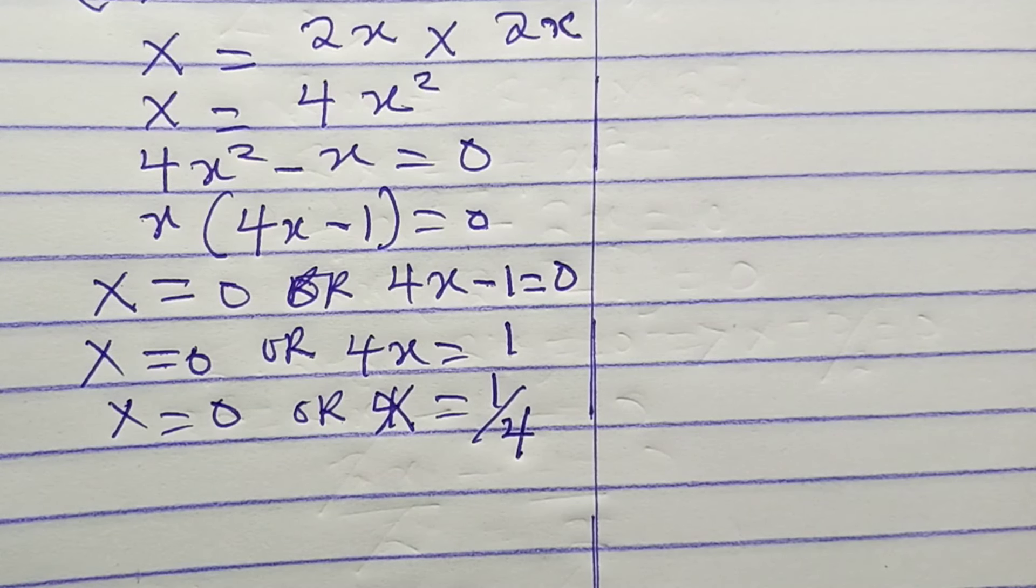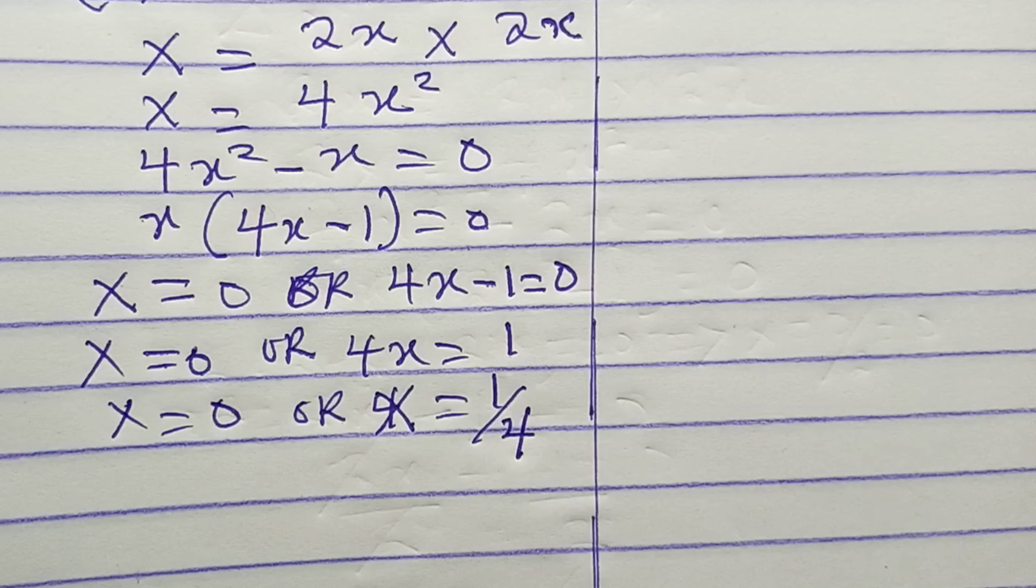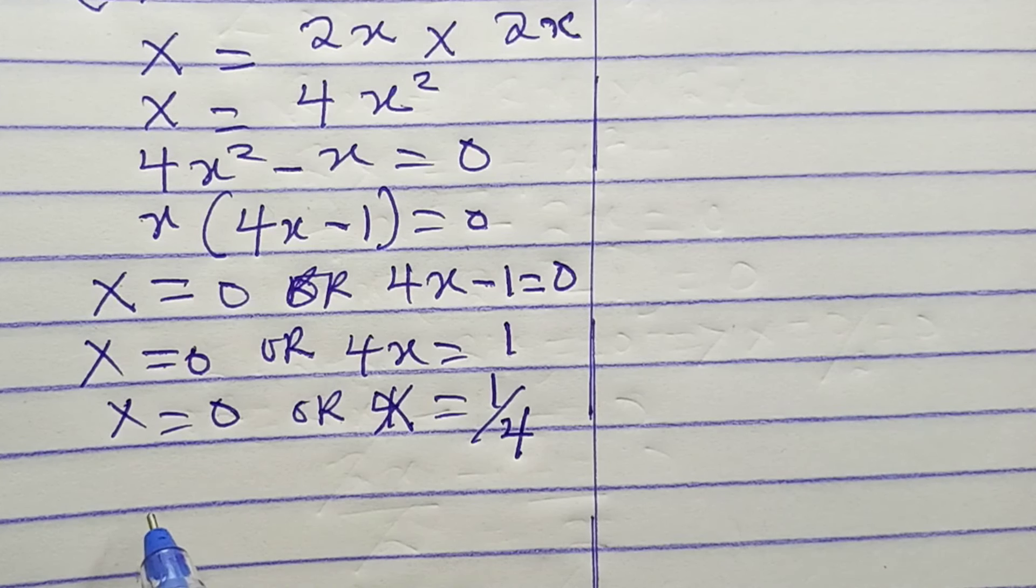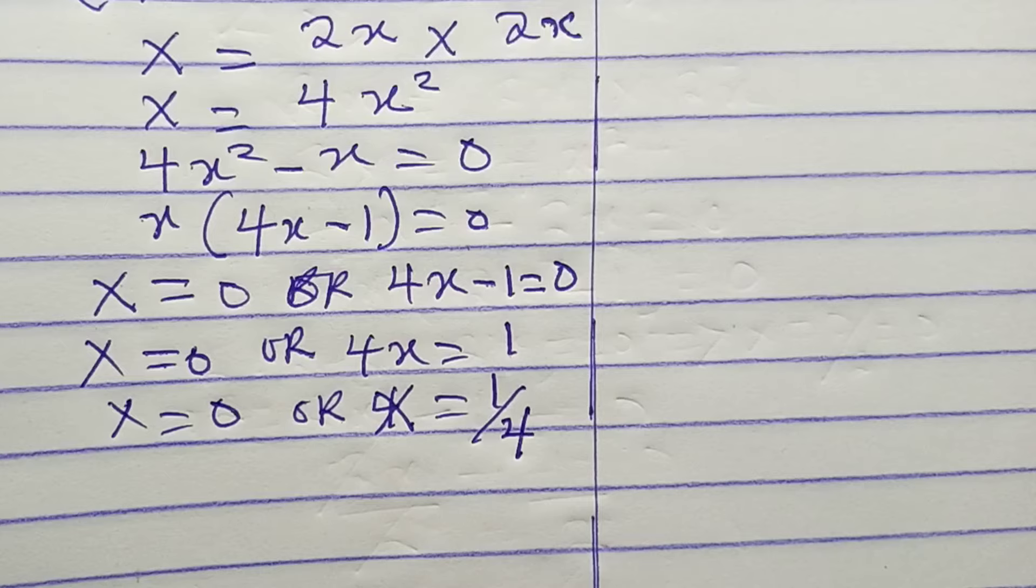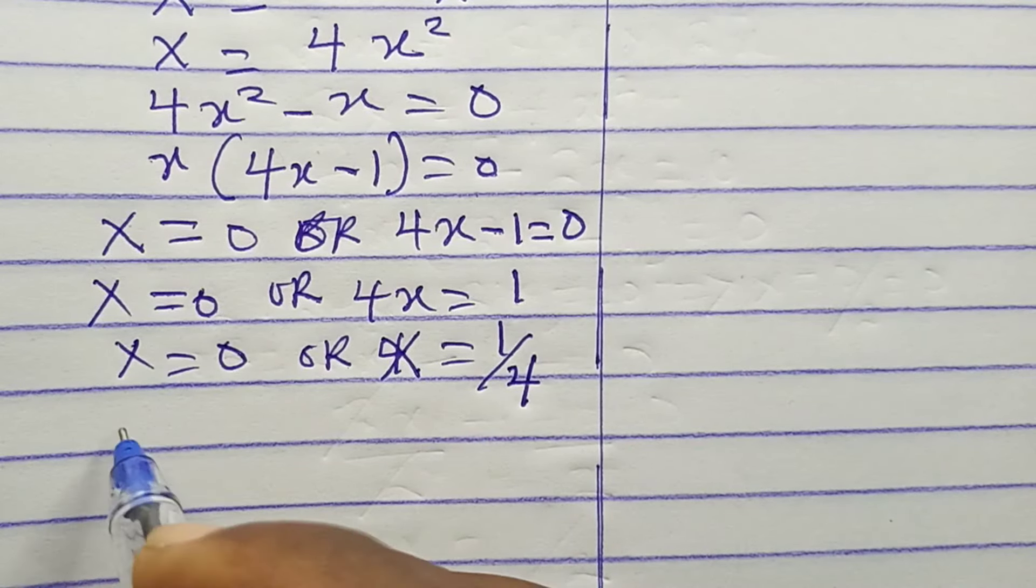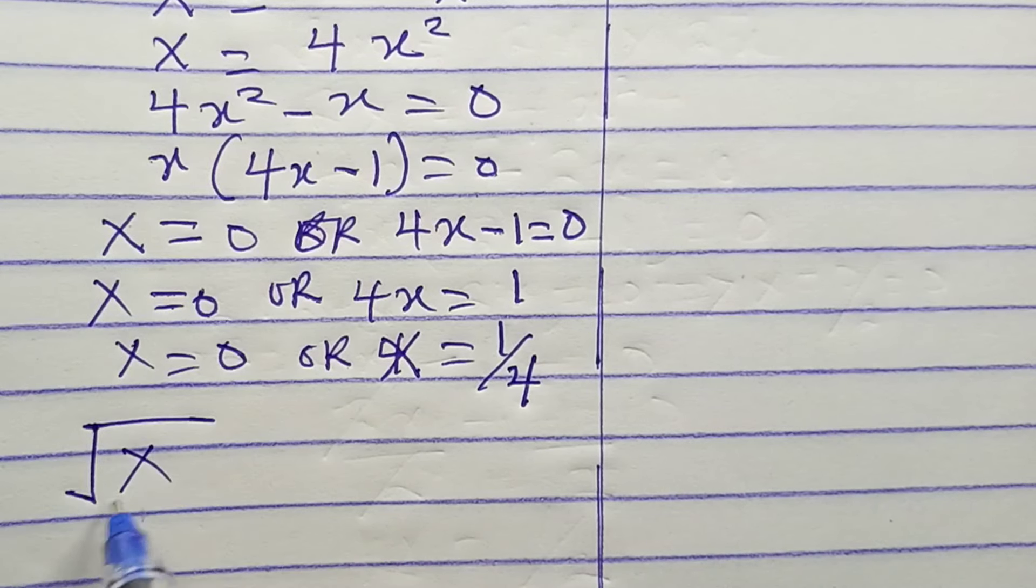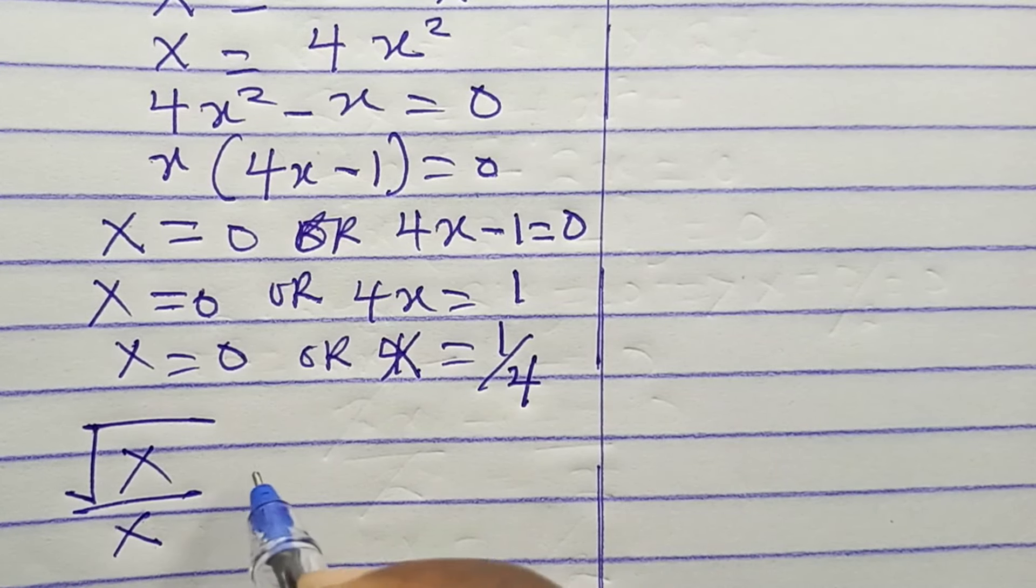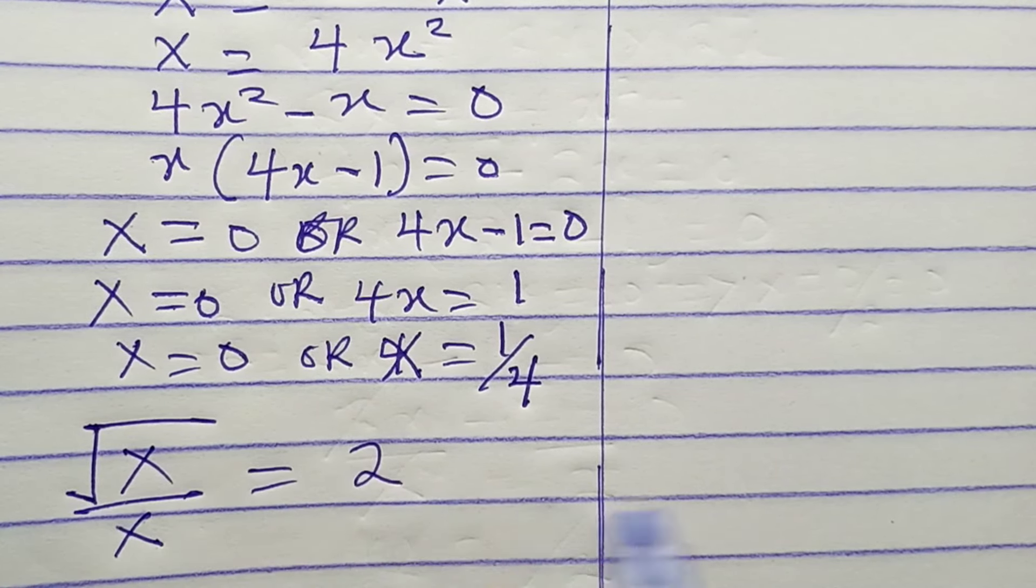That is what we have. We can check if our answers are correct. The first solution, which is zero, is meaningless. But if we put the second solution in the equation root x over x equals 2...